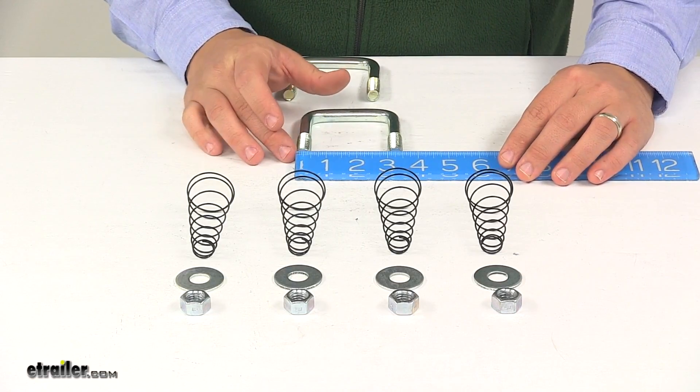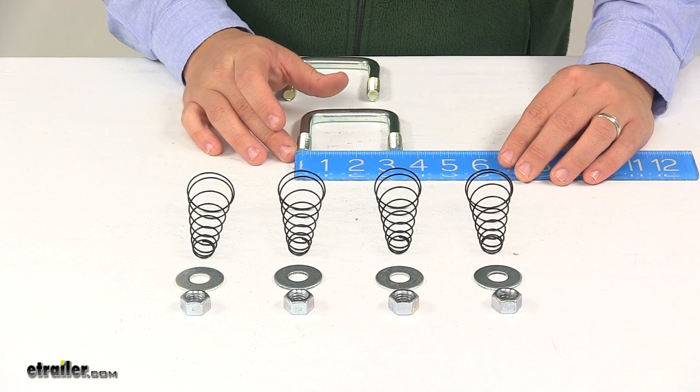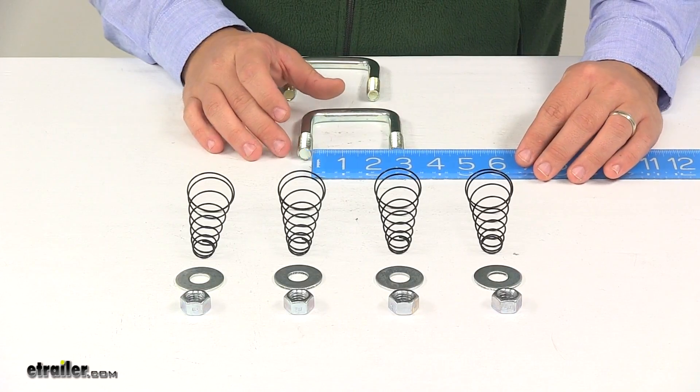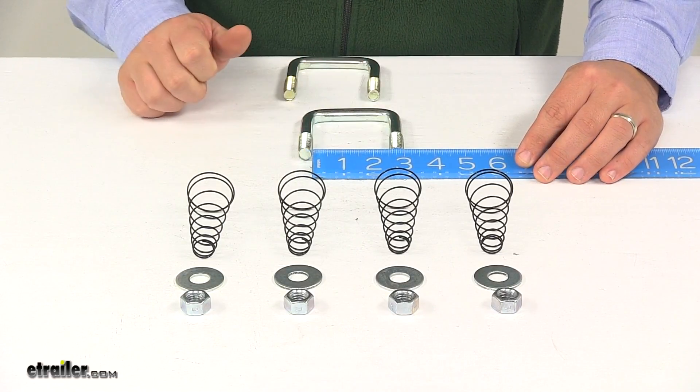External width, that's edge to edge, about three and a half. Internal is two and a half.